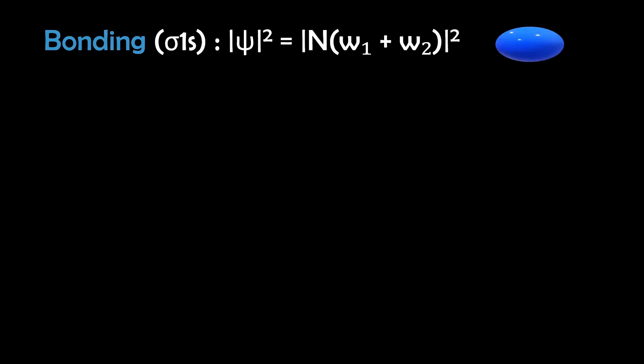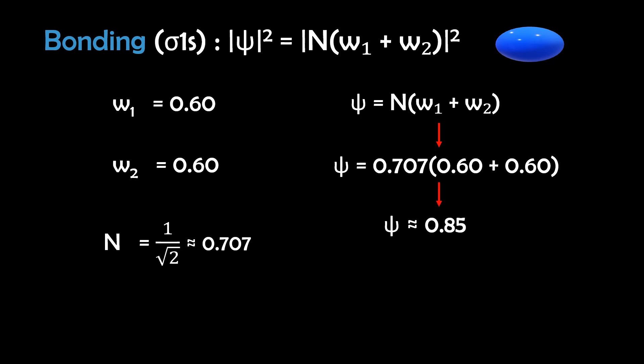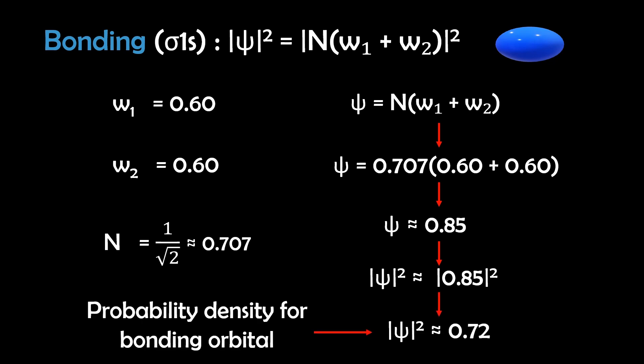To illustrate this, let's assign some arbitrary values to the atomic wave functions. Let's say that for ψ1, we have 0.60, and for ψ2, we have the same, 0.60. And we'll just ignore units for simplicity. Let's also set the normalization constant n to 1 over the square root of 2, which is approximately 0.707. And this is just for demonstration, but in reality, this value depends on the degree of orbital overlap. For the bonding orbital, we calculate ψ to be 0.707 times 0.60 plus 0.60, which equals approximately 0.85. And the probability density is then the absolute value of this squared, which gives approximately 0.72. And this degree of electron density indicates significant bonding in the bonding orbital.